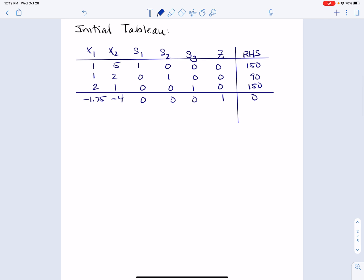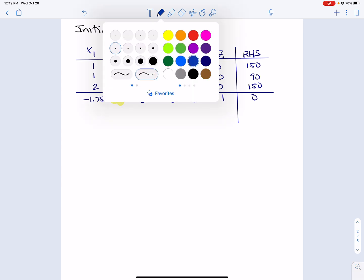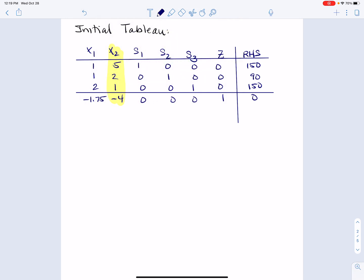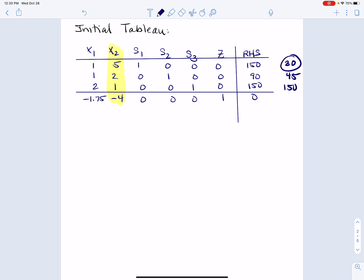So the first thing we do, we look for the most negative entry in the bottom row, and that corresponds to x2. And that means that if I'm going to introduce x2 into this system, I'm going to try to use as much as I can. So we now look at ratios of the right-hand side to the x2, because that tells us the highest number of x2s we can introduce before we bump constraints. So 150 divided by 5 is 30, 90 divided by 2 is 45, and 150 divided by 1 is 150. So the 30 wins.